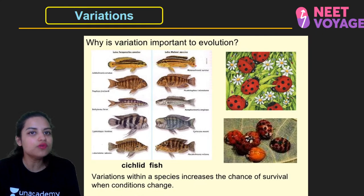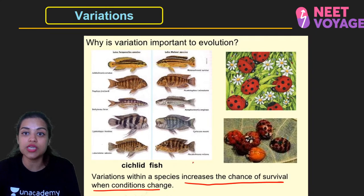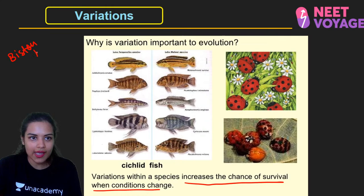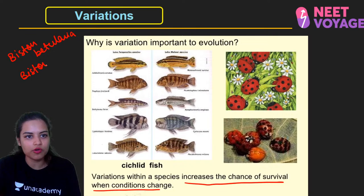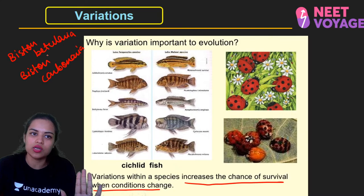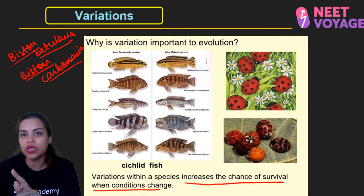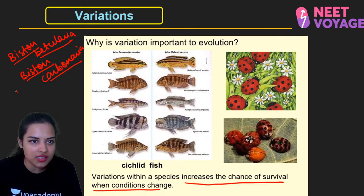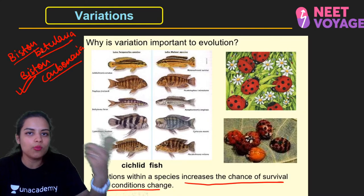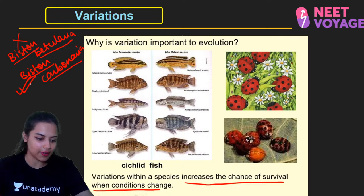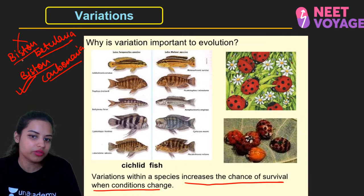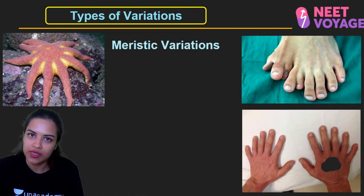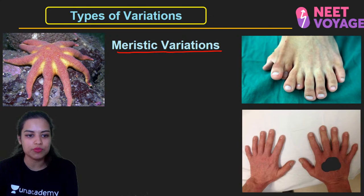Variation within a species increases the chance of survival when conditions change. For example, Biston betularia and Biston carbonaria — during the industrial revolution in England, environmental change benefited Biston carbonaria while harming Biston betularia. This is industrial melanism. So variation means that when the environment changes, one variant survives and evolves forward. The first type is meristic variation — variations that can be counted in numbers, like more than five arms in starfishes, polydactyly (more than five fingers), or presence of more or fewer ribs than the average 12 pairs.